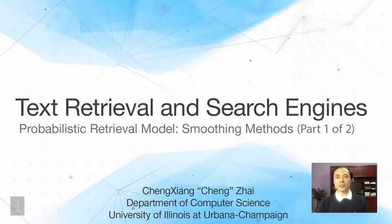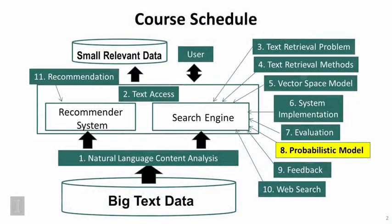This lecture is about the specific smoothing methods for language models used in probabilistic retrieval models. In this lecture, we will continue the discussion of language models for information retrieval, particularly the query likelihood retrieval method, and we're going to talk about the specific smoothing methods used for such a retrieval function.